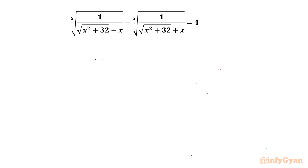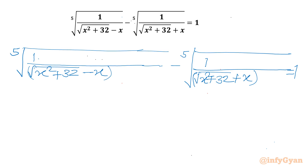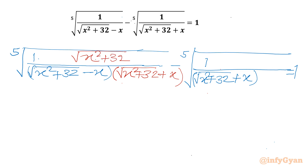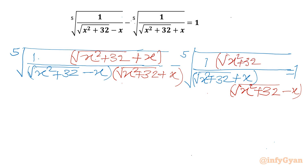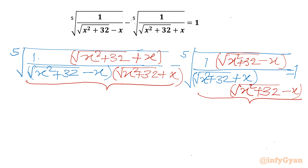Let's get started by writing our equation. We will use rationalization for our denominators. We need to multiply here with square root of x squared plus 32, plus x. The same bracket we will multiply in the numerator: square root of x squared plus 32 plus x. For the second term we need to multiply with square root of x squared plus 32 minus x, so we multiply the numerator by that same bracket. In the denominator we have the (a plus b)(a minus b) form, which uses the algebraic formula: a plus b times a minus b equals a squared minus b squared.